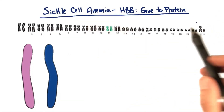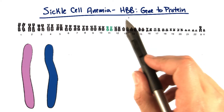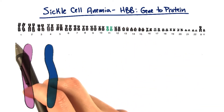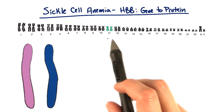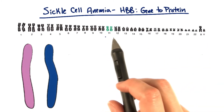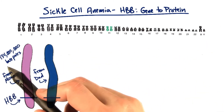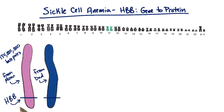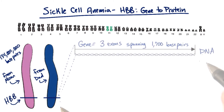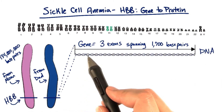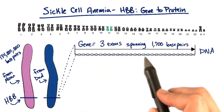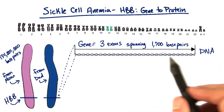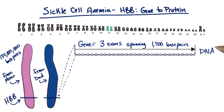One of the most important proteins, hemoglobin beta, is encoded by the HBB gene. In humans, HBB can be found on the 11th chromosome in the human genome. Chromosome 11 is about 134 million base pairs long, and the HBB gene can be found somewhere close to the end of it. The HBB gene itself consists of three exons spanning 1,700 base pairs of DNA — actually kind of small in comparison to some of the other genes we've looked at.